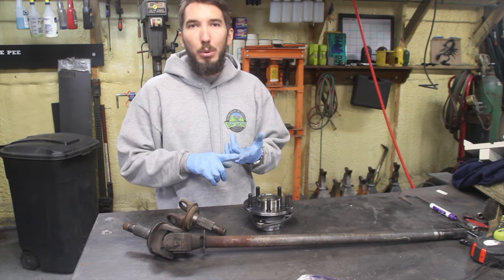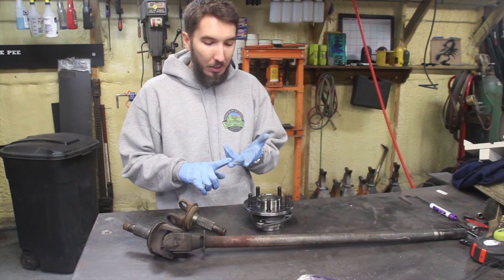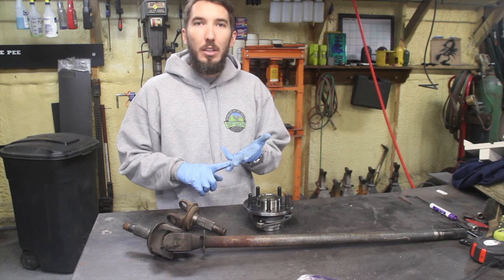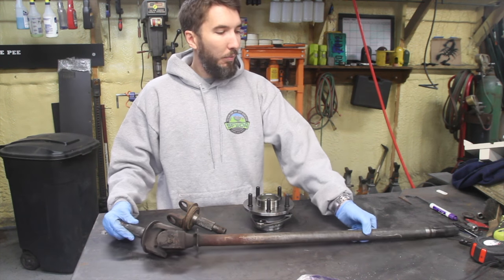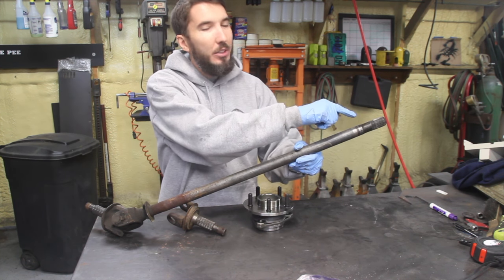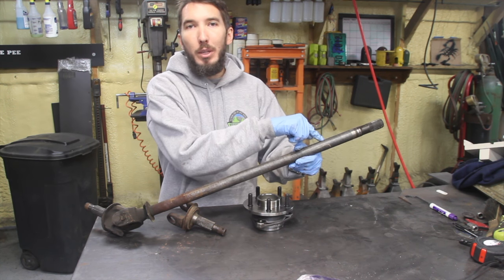Anytime you have two driveline components meeting together, you're going to have splines. So you have splines on the output shaft of your transmission, on the output shaft of your transfer cases. You've got splines on the inside by the carrier. You can even get these with different splines on the carrier side. So the more splines, the better because it's going to lead to a bigger shaft.